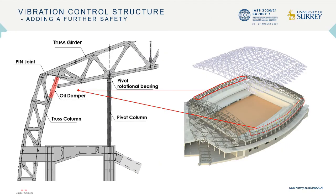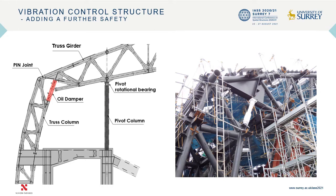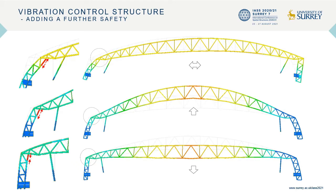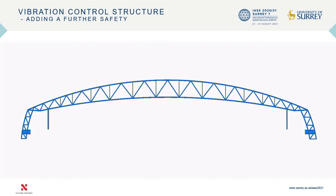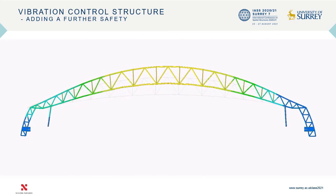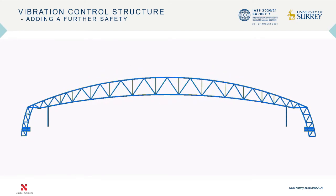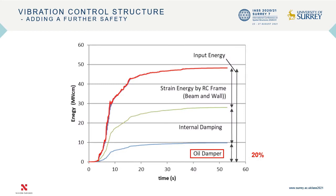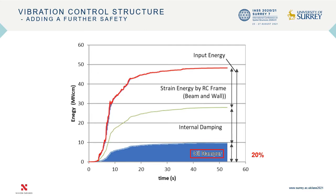Oil dampers are installed at the joint of the truss girders and the truss columns. Oil dampers provide damping effects against horizontal and vertical motion. When the truss girders move vertically and horizontally, the oil dampers deform in the axial direction to provide damping effects, reducing roof vibration. As shown on the graph, oil dampers absorb about 20% of input energy of extremely rare seismic motion.